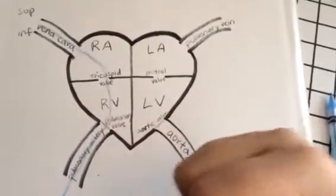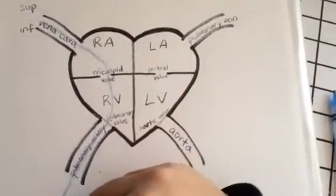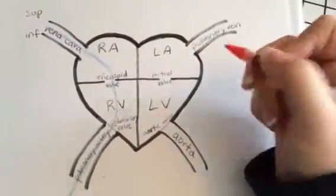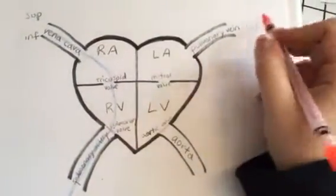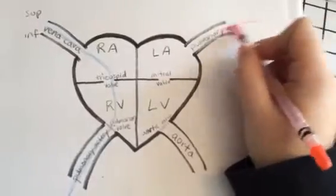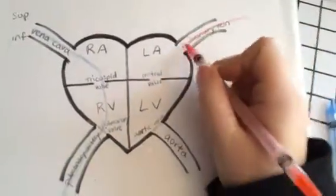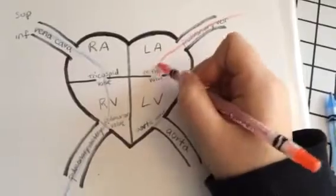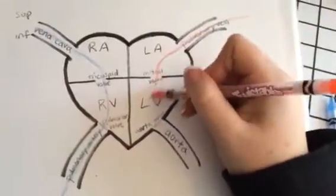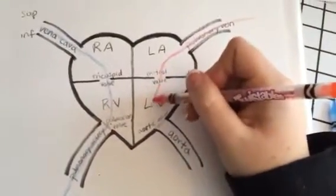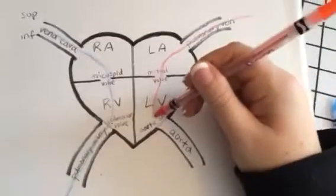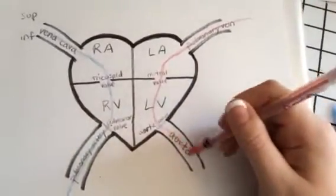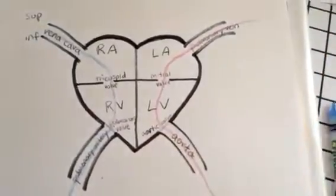In the lungs, we breathe in oxygen, so the blood picks up oxygen and becomes oxygenated. That red blood then travels from the lungs through the pulmonary vein into the left atrium, through the mitral valve to the left ventricle, through the aortic valve, through the aorta, and into the rest of the body.